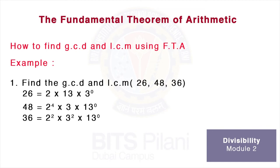Now, to find the GCD and LCM, we need each prime to be present in every integer. In the first integer 26, 3 was not present, so we multiply by 3⁰. In 48 and 36, the prime 13 was not present, so we multiply both these products by 13⁰.